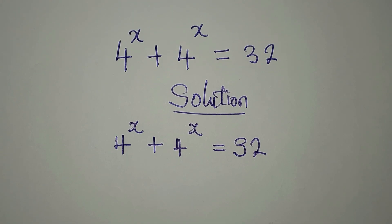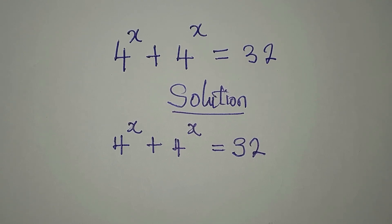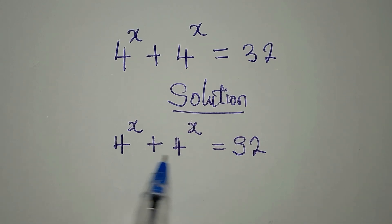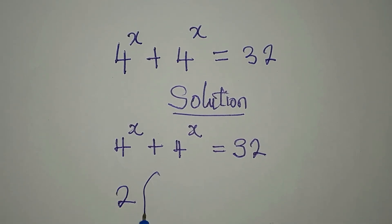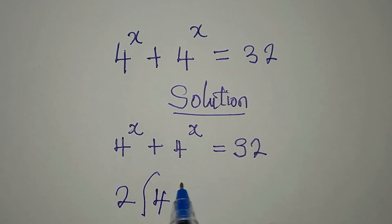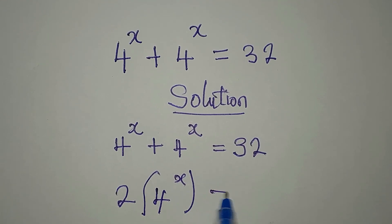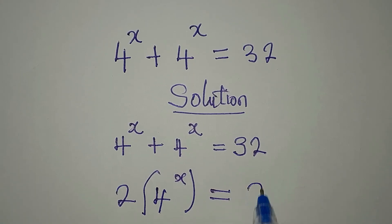I'm going to add the left-hand side and the right-hand side. So if I add this and this, I'm going to have 2 times 4 to the power of x. Do you know that this is going to give us 32? I think you know that.